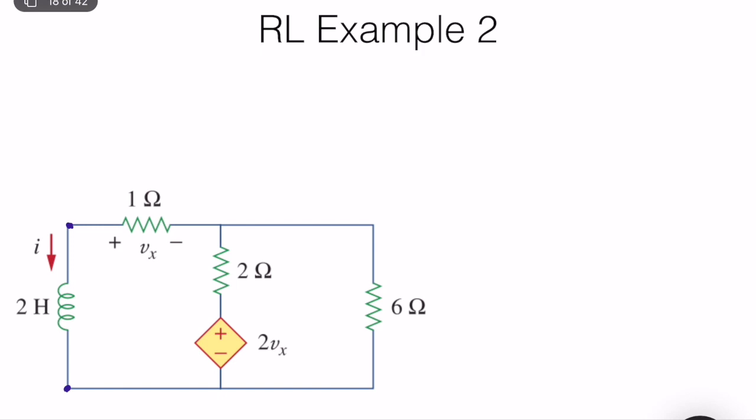Because there is a dependent source, we cannot use simple series-parallel rules to find the equivalent resistance. Instead, we connect a test current source of 1 A at the terminals. With 1 A injected, Vx = 1 V, so the dependent source equals 2 V — it now behaves like a known independent source. We apply mesh current analysis to the circuit.